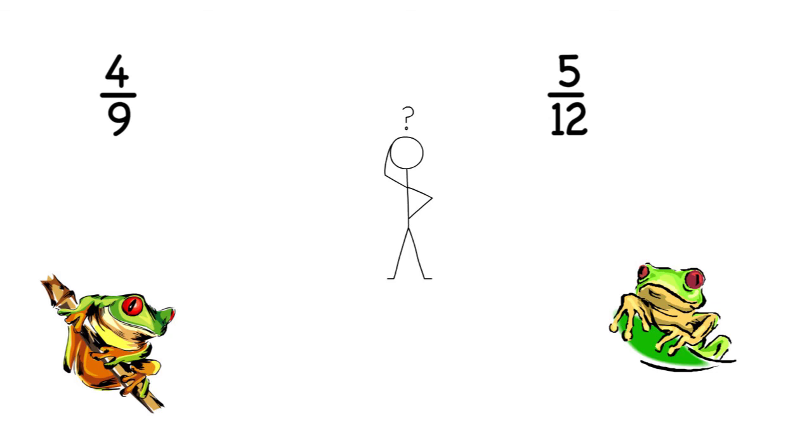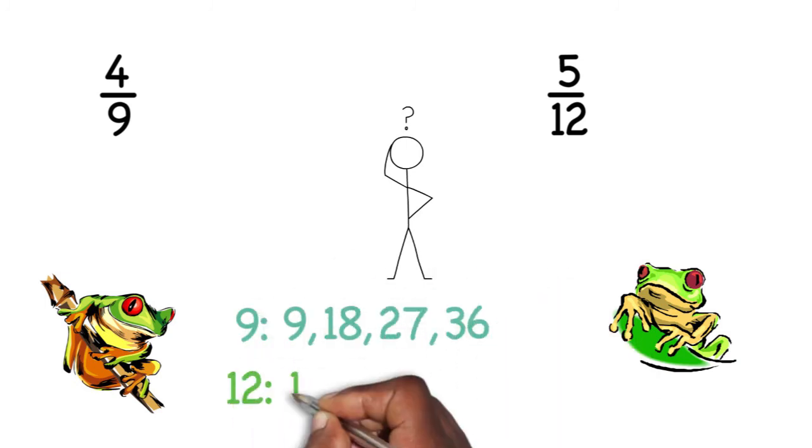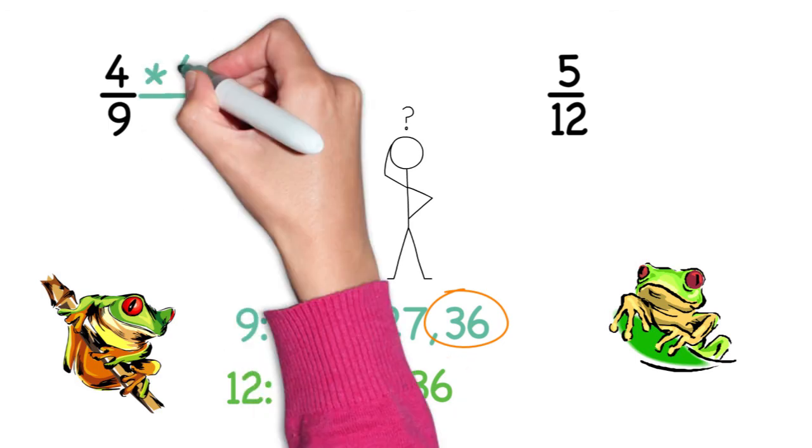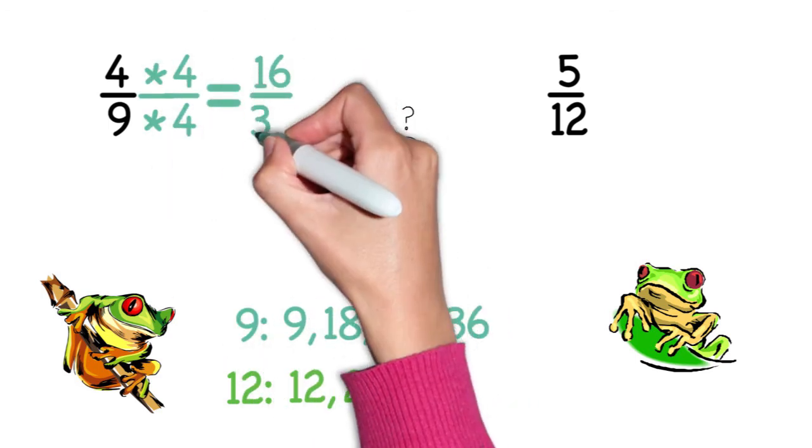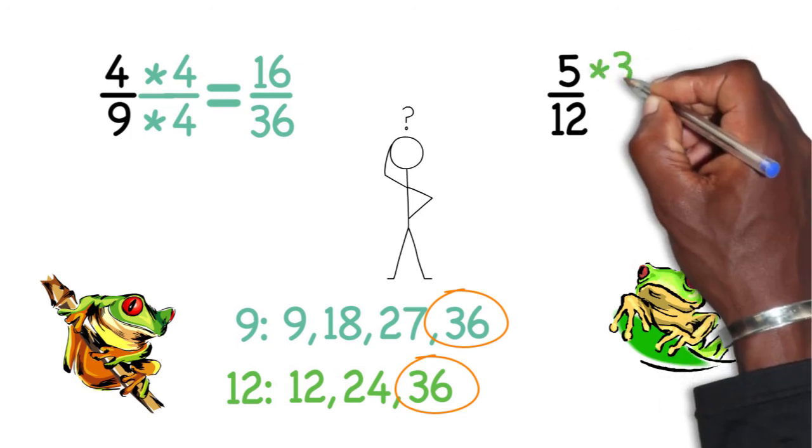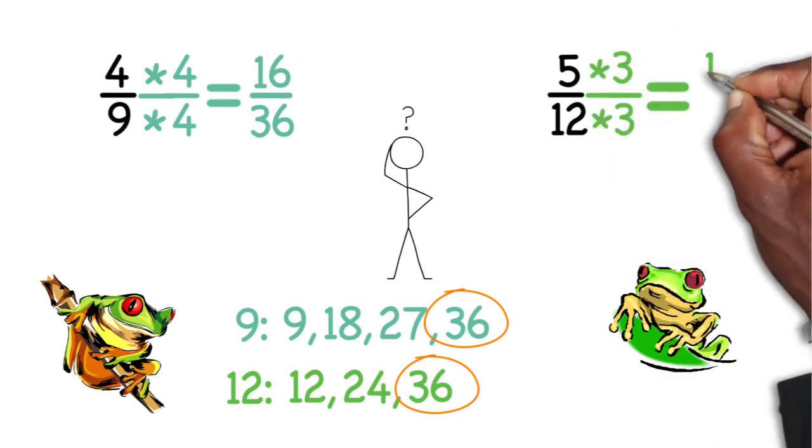To compare these fractions, we need to find a common denominator. Usually we do this by writing out the multiples of nine and the multiples of twelve. Then we look for the smallest number that they both go into. In this case, thirty-six. If we multiply four-ninths by four over four, we get sixteen thirty-sixths. And if we multiply five-twelfths by three over three, we get fifteen thirty-sixths.